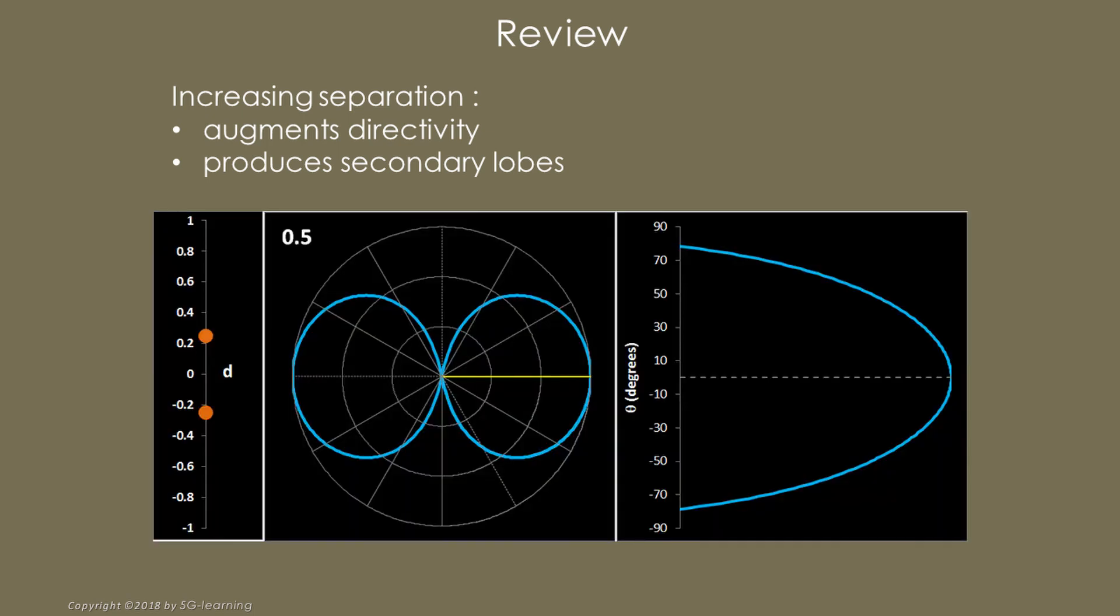In summary, increasing the separation between array elements, the lobe width decreases. In other words, the array directivity improves. However, secondary lobes appear, increasing the array directivity toward unwanted vector directions. This animation shows the array pattern evolution when the distance between elements varies from one half to a full wavelength.